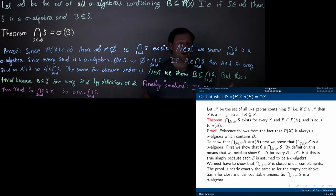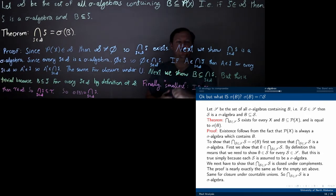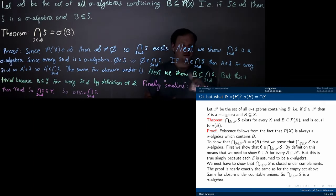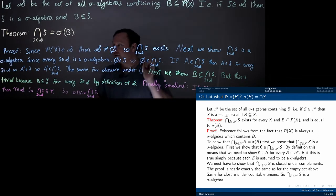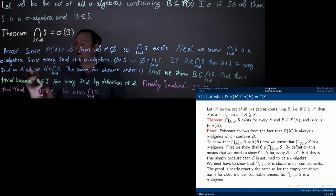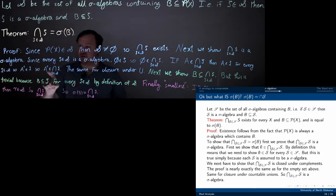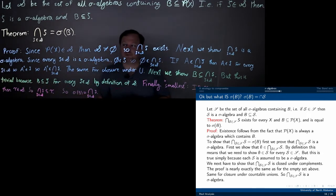Let's show closure under complement. If you take anything out of this intersection, I need to show that the complement of that thing is also in the intersection. Since it's in the intersection, by definition it is in every single one of those calligraphic S's contained in cursive S. They are all sigma algebras and therefore closed under complement, so the complement is in all of those as well. Since the complement is in every single one, it's in the intersection.